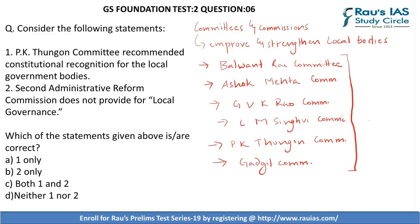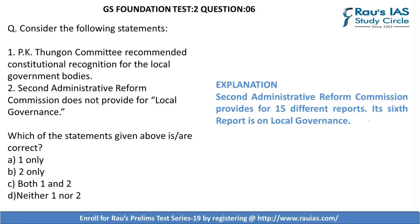The first statement reads: the P.K. Thangon Committee recommended constitutional recognition for local government bodies. This is a correct statement. Second — the Second Administrative Reforms Commission does not provide for local self-governance. This is wrong. The Second ARC was set up by the Government of India to look into ways to improve administrative setup in the country, and its sixth report deals with local governance. Hence, the correct answer is A — 1 only.